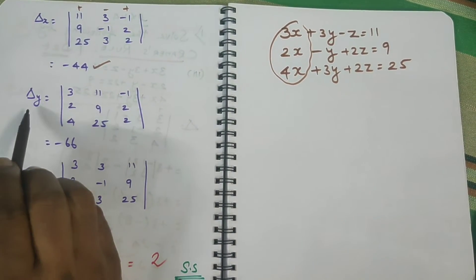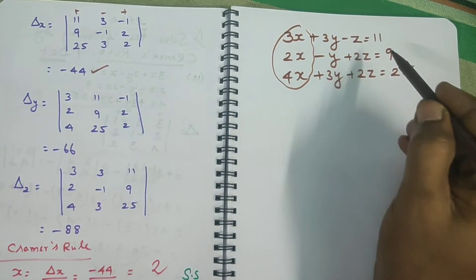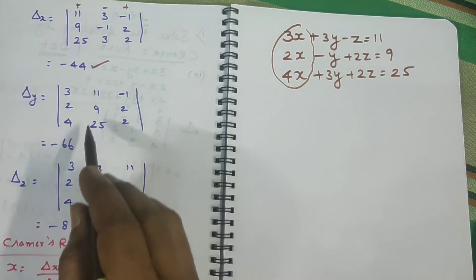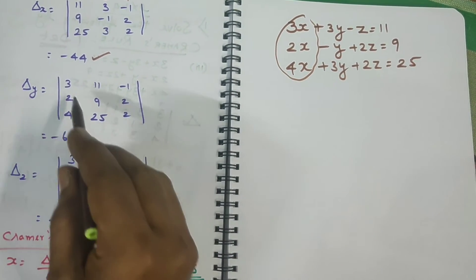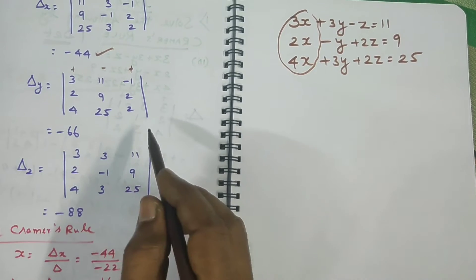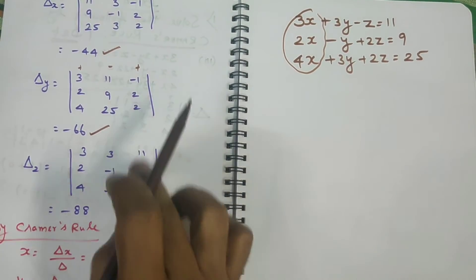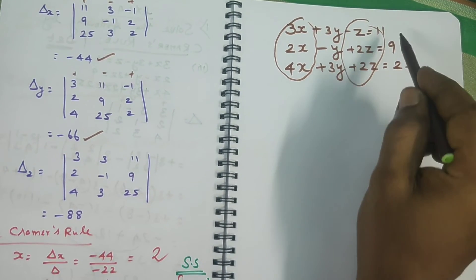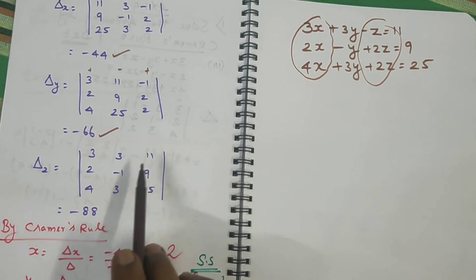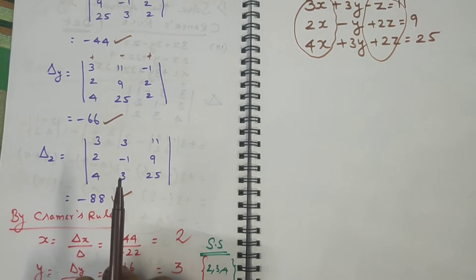For delta y, we substitute the constant values in place of the y-coefficient column — entering 11, 9, 25 as the column — while the x-coefficients and z-coefficients remain unchanged. Similarly for delta z, the z-coefficient column is replaced by the constant values. After finding delta, delta x, delta y, and delta z, we apply Cramer's rule formula.